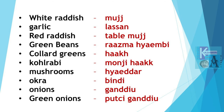Garlic is Lasan. Lasan. Red radish is Table Muj. Table Muj. Green beans are Rasmahamb. Rasmahamb. Kohlrabi greens is Haak.